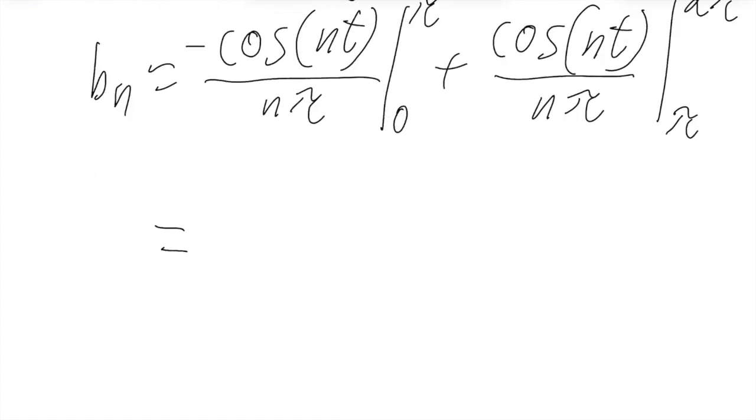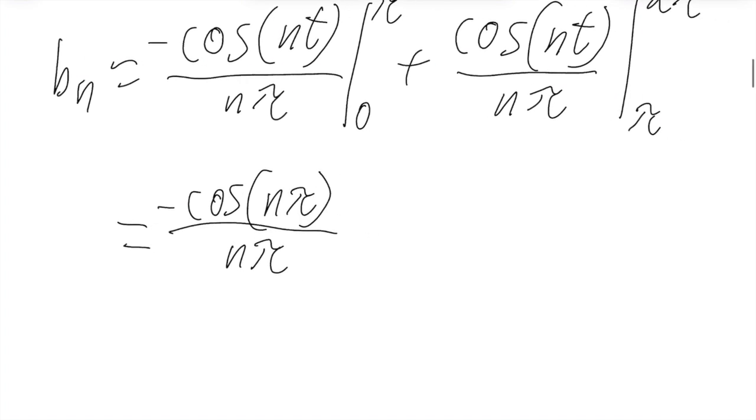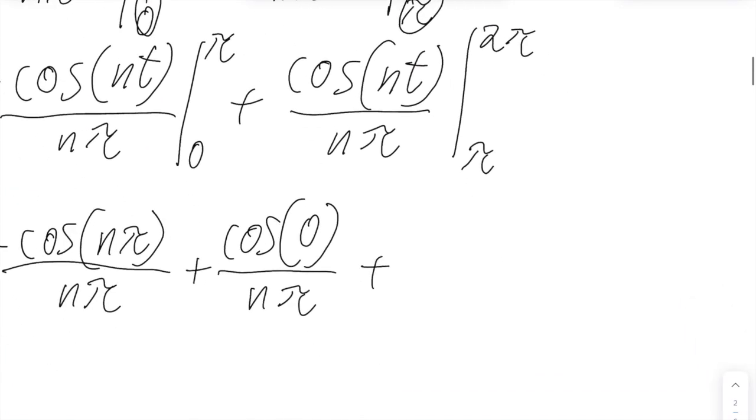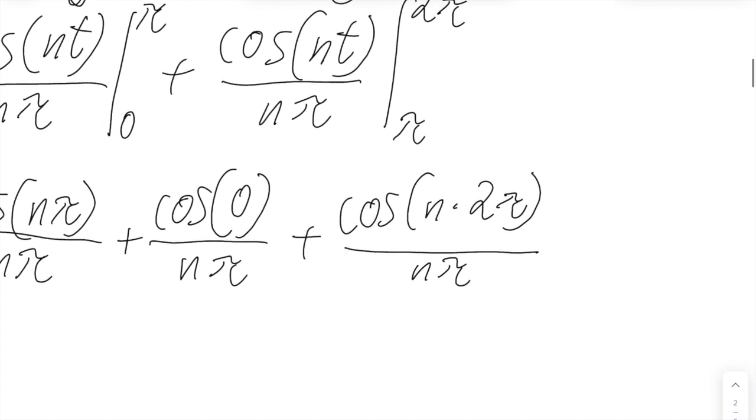So now moving on to b_n. So we'll have negative cosine of nπ over nπ minus negative cosine or plus cosine of 0 over nπ. Then to this, we'll add, because the negative cosine and the minus here are canceled out. So it's adding plus cosine of n times 2π over nπ minus cosine of nπ over nπ.